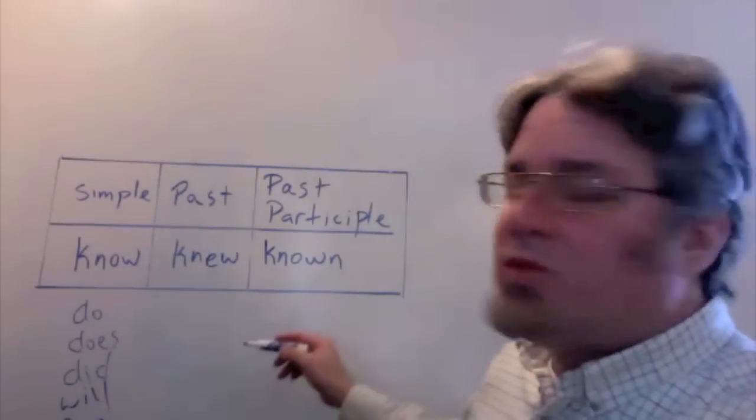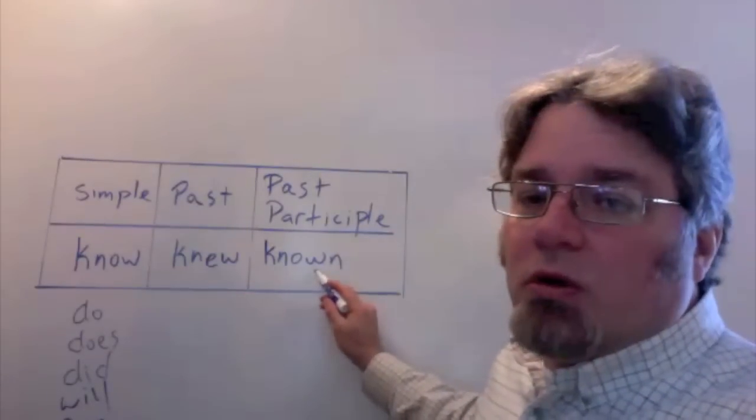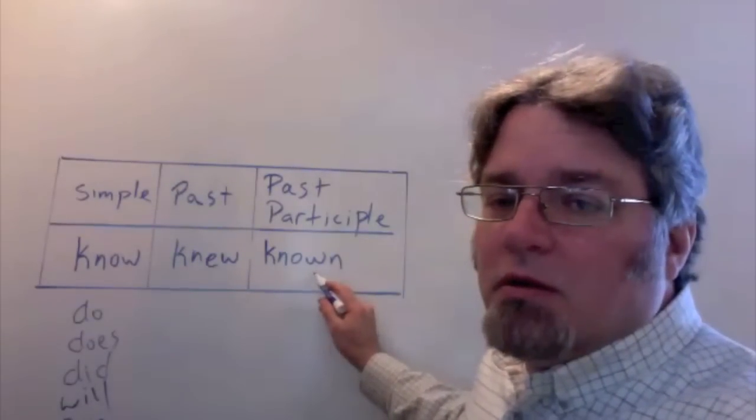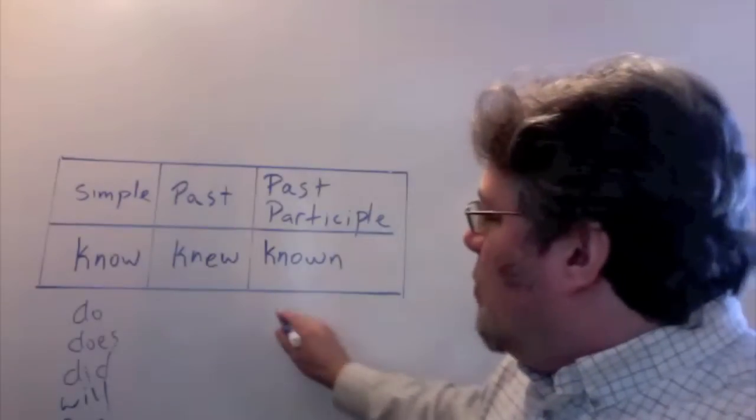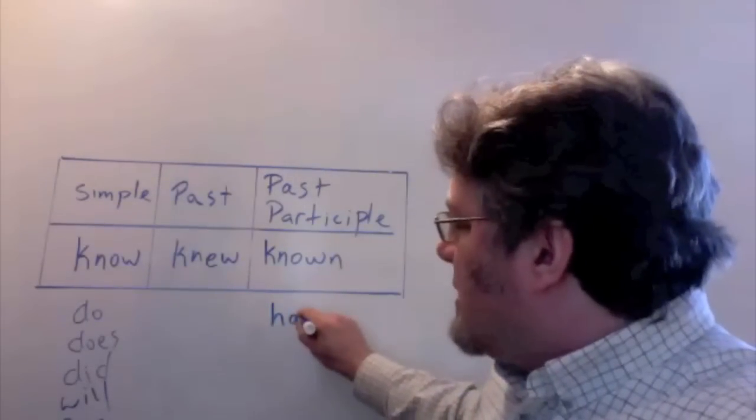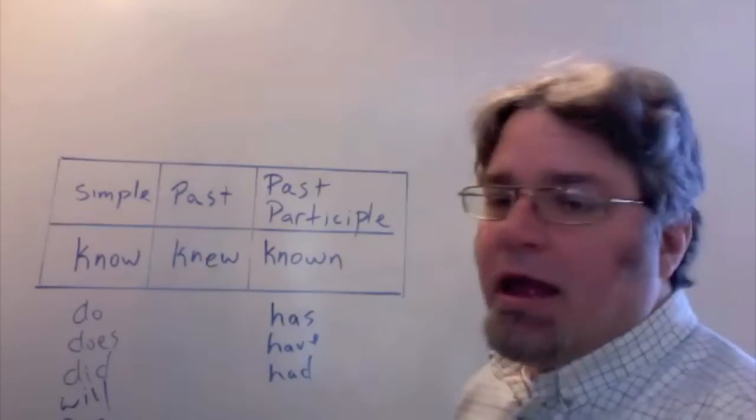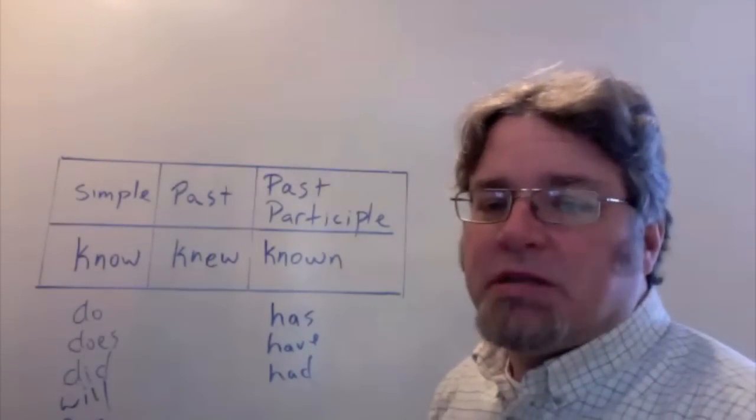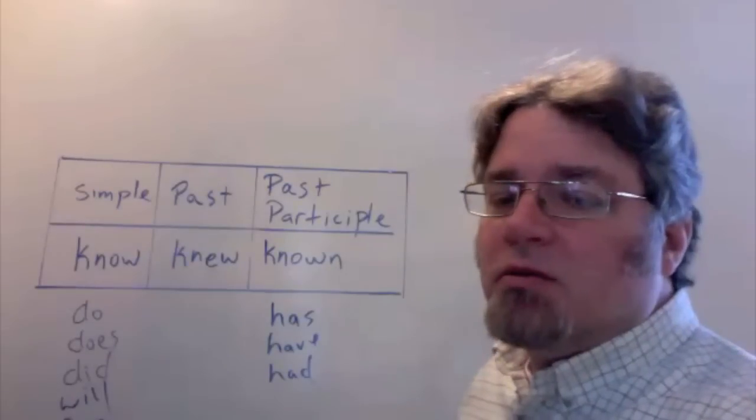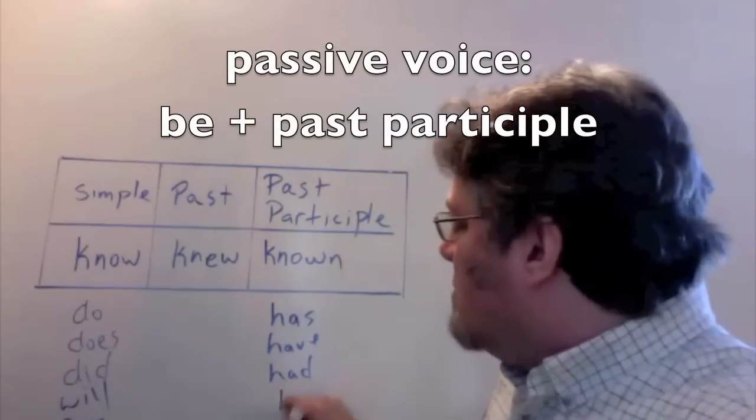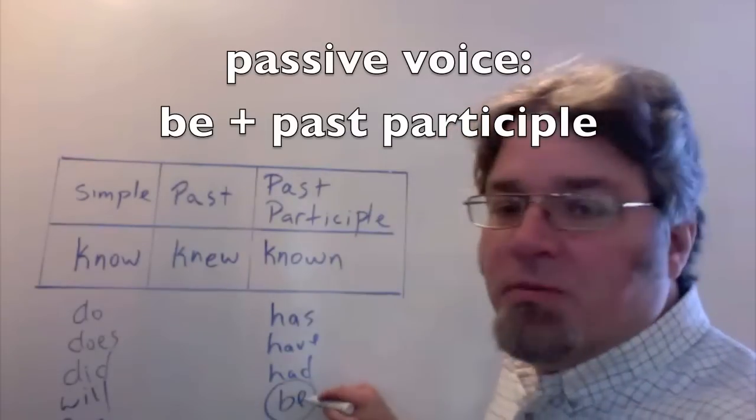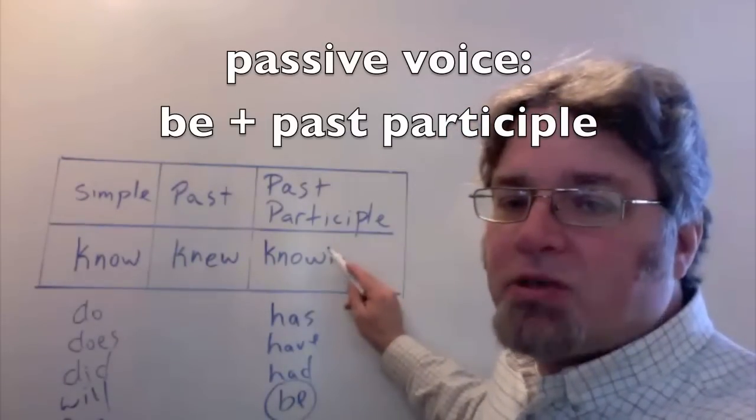And the past participle is known. Use the past participle with helping verbs like has, have, or had for perfect tenses. And to make the passive voice, use some form of the verb be and then the past participle.